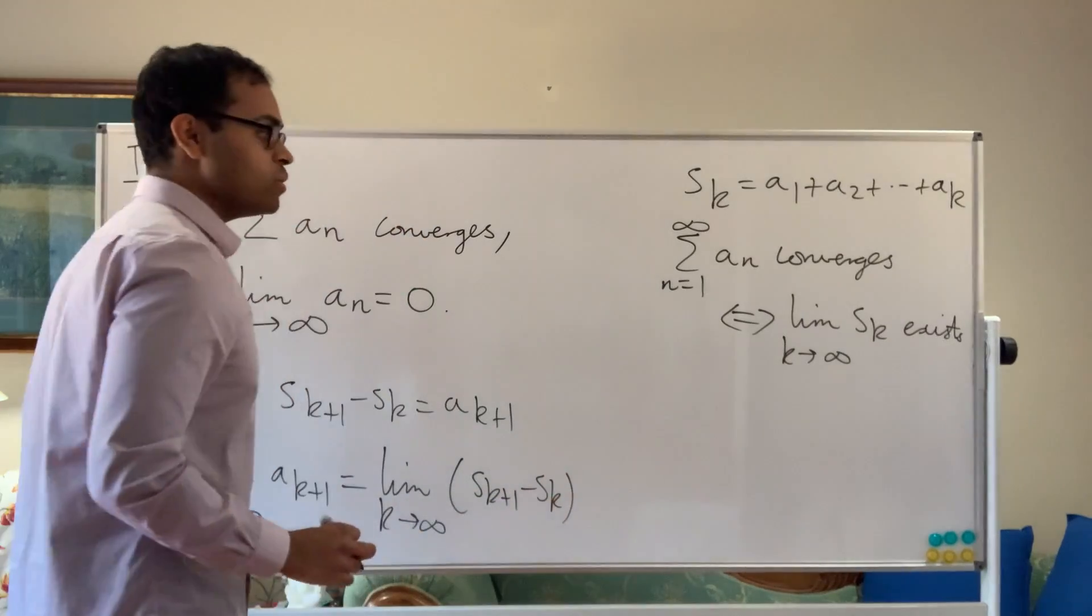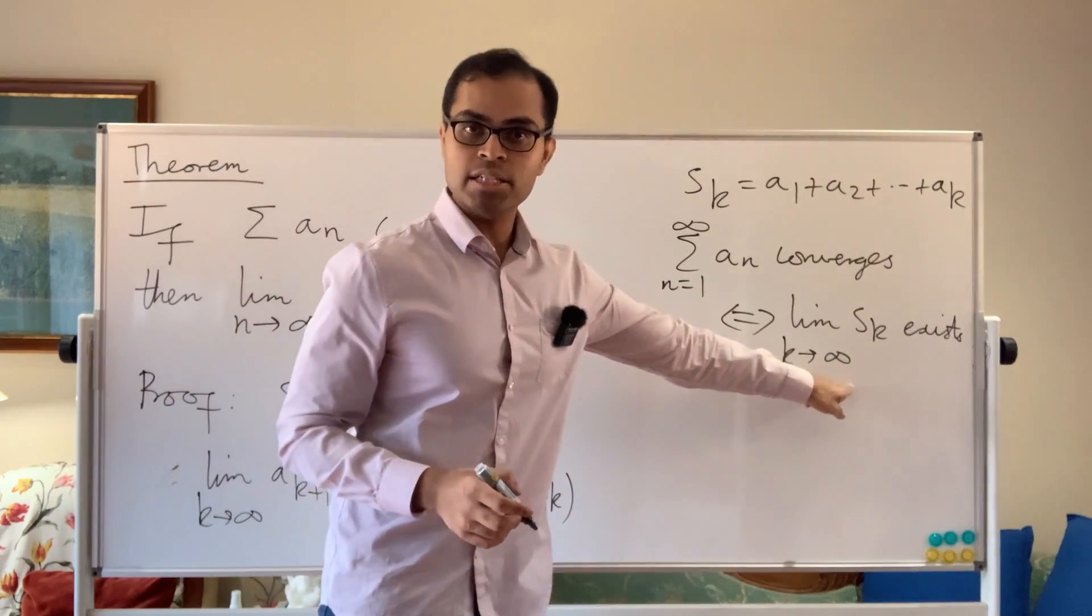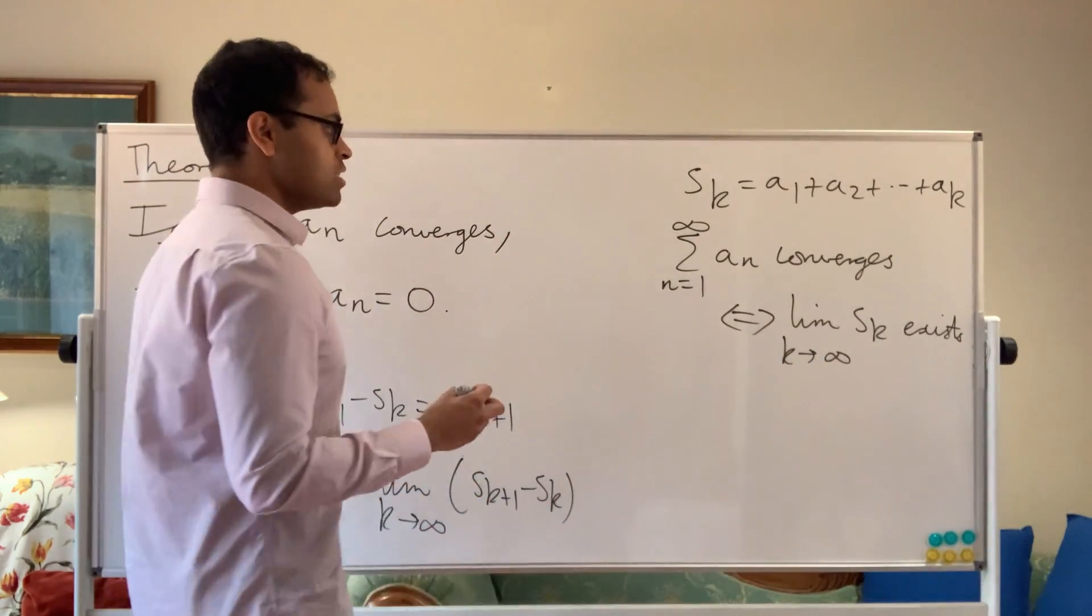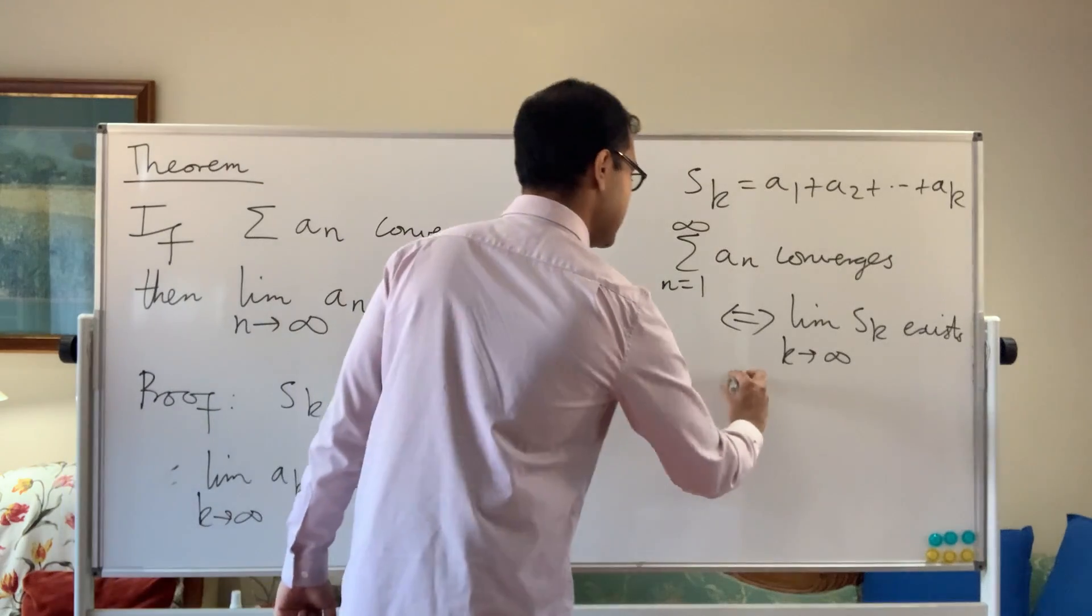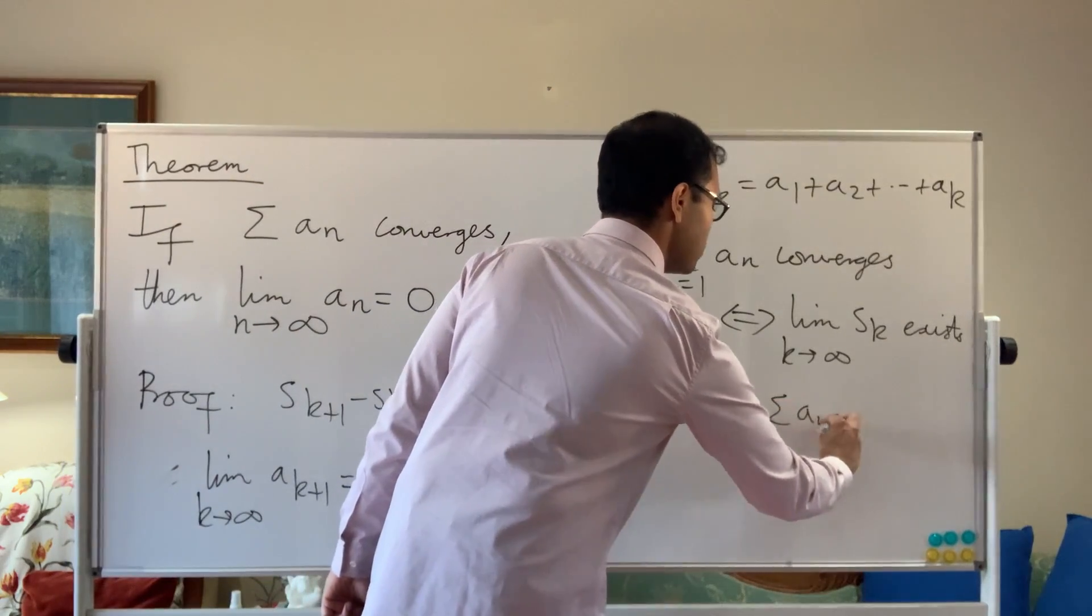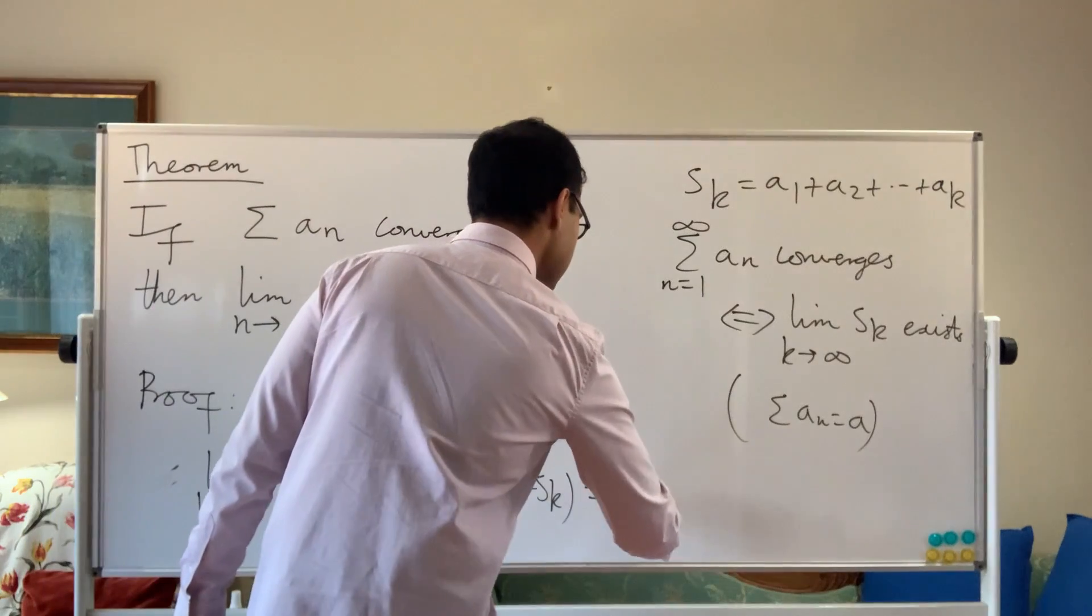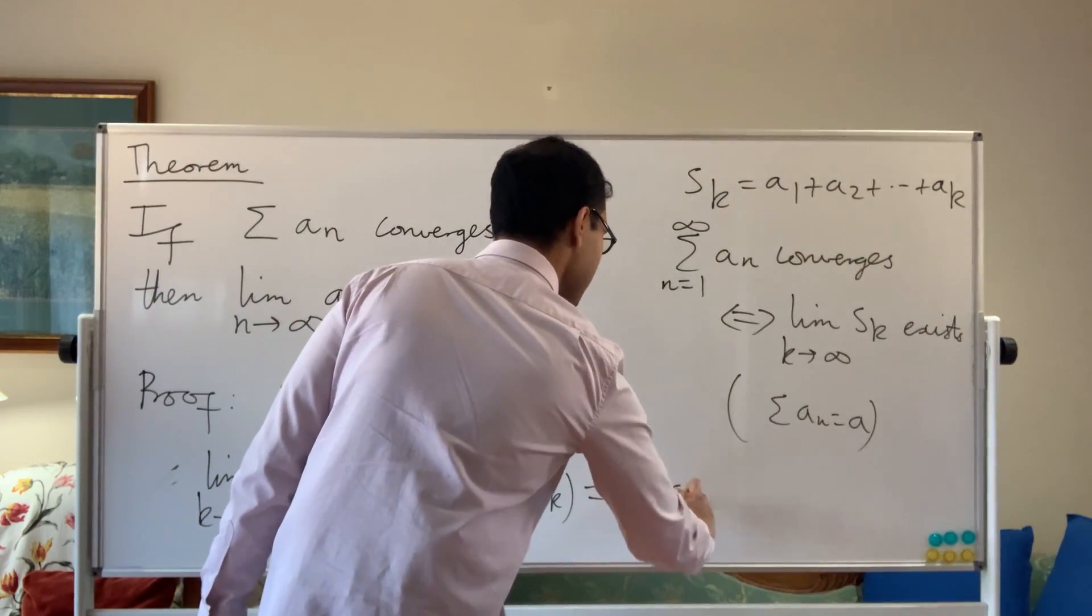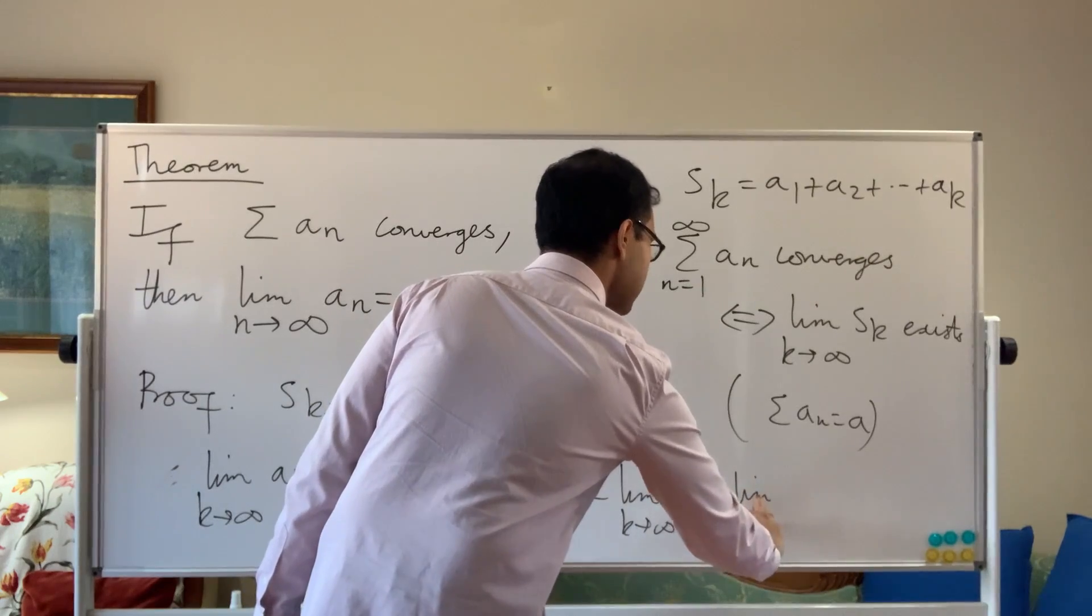And now what's super cool is we know limit laws. We know that each of these limits converges. The limit of this sequence of partial sums is just the sum of the series. So let's say the sum a_n converges and it's equal to a. So let's write here that sum a_n is equal to a. Doesn't really matter. The point is that using limit laws, this is equal to limit k goes to infinity of S_{k+1} minus limit k goes to infinity of S_k.